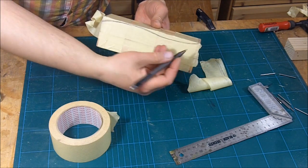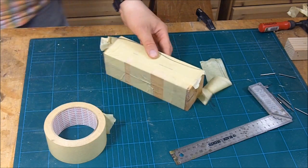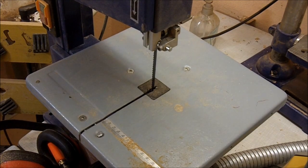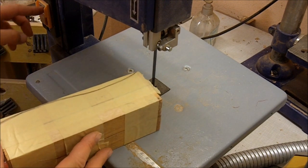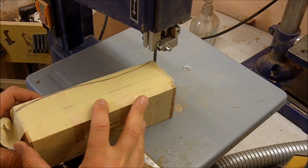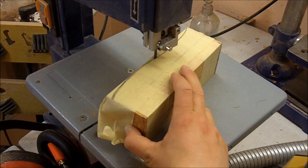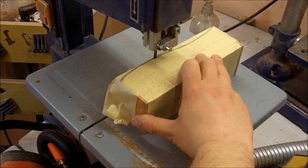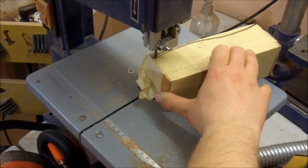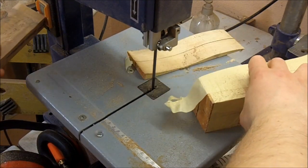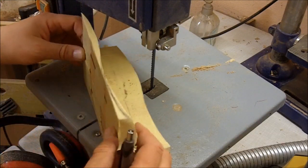Now try to come up with a somewhat pleasing shape. I'll cut it out on the bandsaw, then use this cutoff piece as a template for the other side.